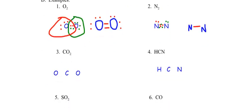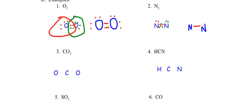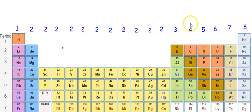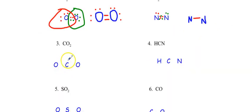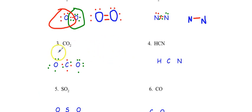Now let's do carbon dioxide. Carbon is my central atom and has four valence electrons. Oxygen has six valence electrons, so I put six on each oxygen. Looking at this setup, every oxygen has seven electrons around it and carbon only has six. That's not right yet.